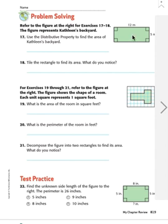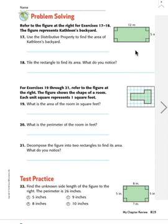If you know your facts really good, you don't have to use the distributive property — you could just multiply 12 times 5. Or what I can do is decompose this. I can write down 5 times 10, that's 50. And then I could also do 5 times 2, that's 10. So if I add 50 and 10 together, I get the same answer as 12 times 5. And the answer is 60. So the area of her backyard is 60 meters.